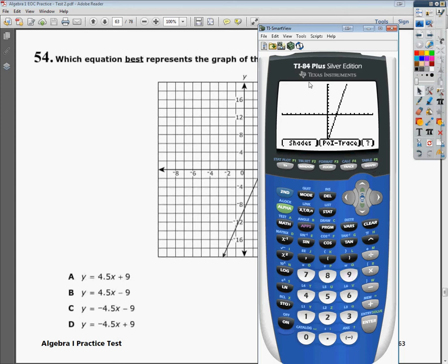So, see how it crosses underneath here? Way down at negative 9. And then it has that positive slope. So, the answer is still B either way.